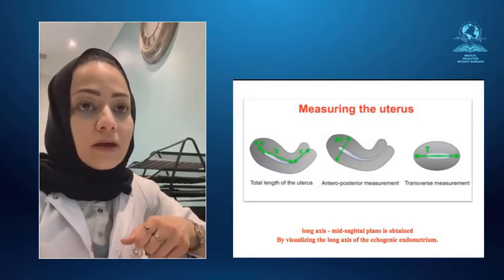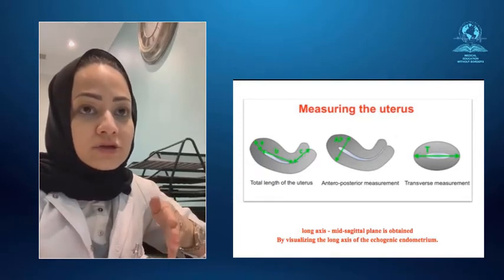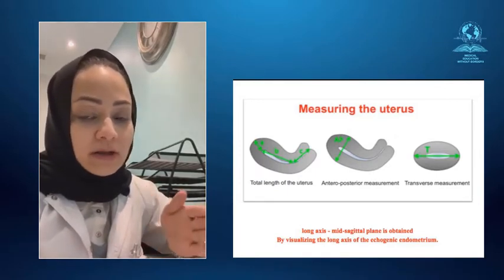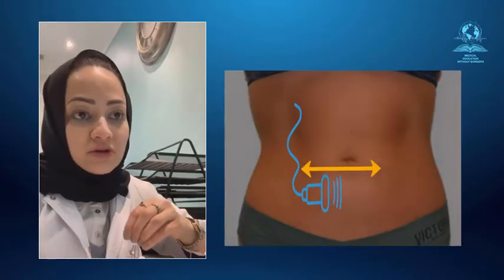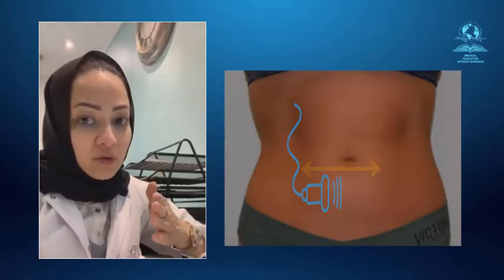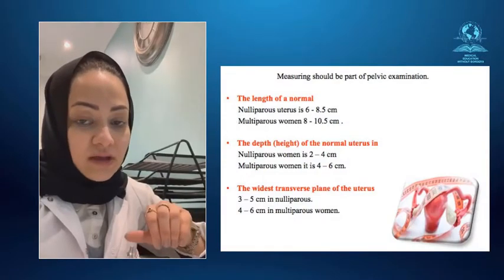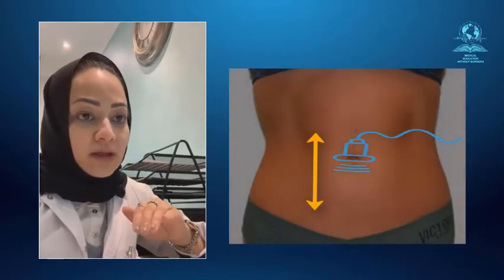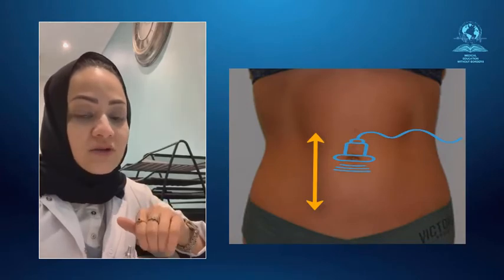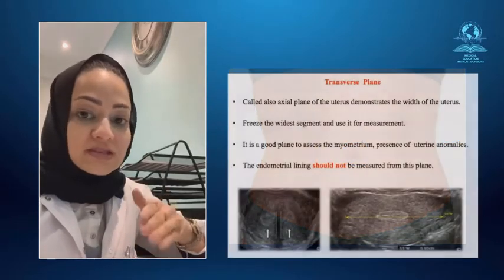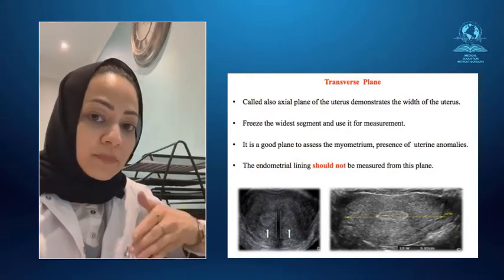Transabdominally, what we require is a mid-sagittal view in which we see the whole uterus, sweeping right and left until the whole picture disappears. We also aim to see the cervix in a mid-sagittal view and at the same time see the endometrium. Then change the probe to a transverse view to get the transverse view of the entire uterus and cervix, sweeping up and down. The same is done for the right and left adnexa to check for any adnexal or ovarian pathology.